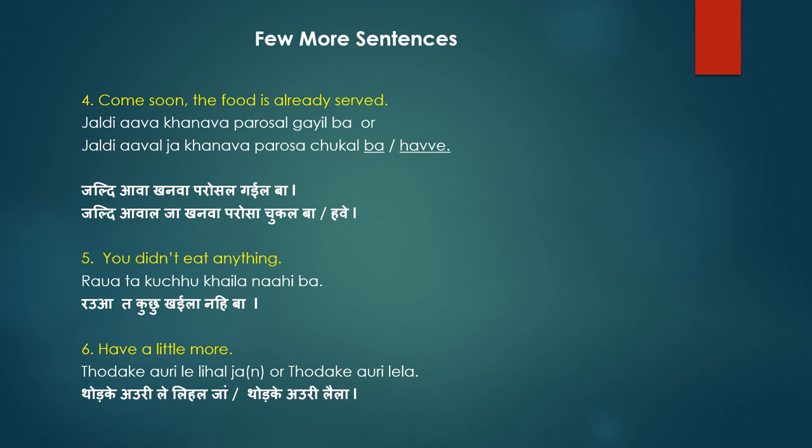Now: 'Come soon, the food is already served.' This is generally said to a family member — a child studying, a husband reading, or a wife in another room. There are two ways to say this in Bhojpuri: 'Jaldi awa, khanava parosa gailba' — where 'jaldi' means fast, 'khanava' means khana (food), and 'parosa gailba' means it has been served. Alternatively: 'Jaldi awa, khanava parosa chukal ba' or 'parosa chukal hawe.'